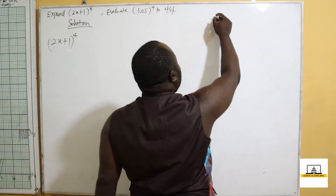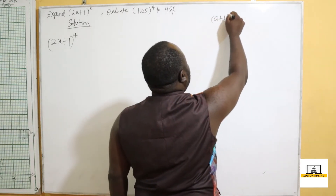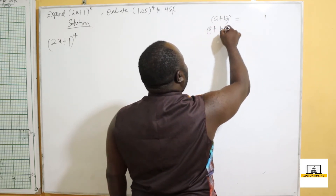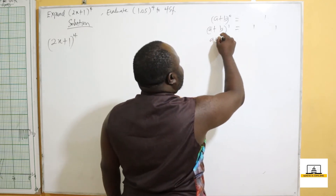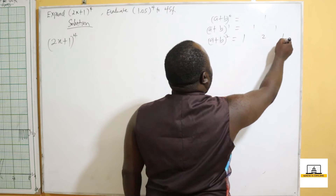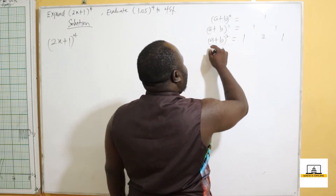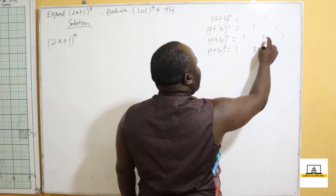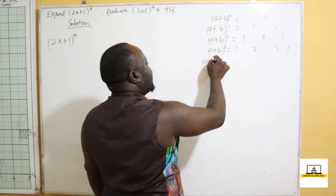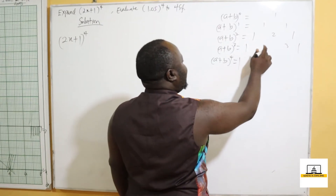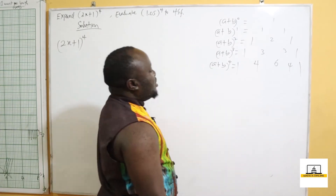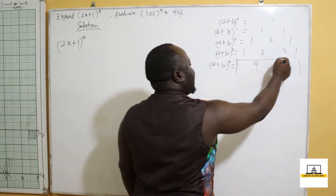We know that for (a+b)^0, the coefficient is 1. For (a+b)^1, the coefficients are 1, 1. For (a+b)^2, we have 1, 2, 1. For (a+b)^3, we have 1, 3, 3, 1. For (a+b)^4, we have 1, 4, 6, 4, 1. So these are the coefficients we are going to use.